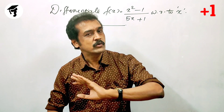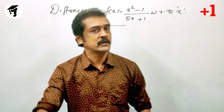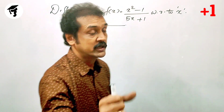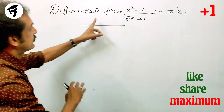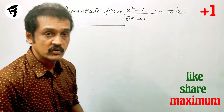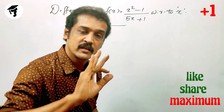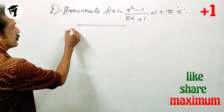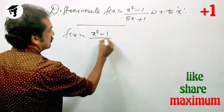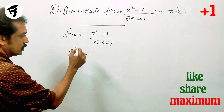Try it in a different way and share it in a different way. And I will try it in a different way — differentiate f of x, which is x squared minus 1 divided by 5x plus 1, with respect to x. It is sure question — one question is 3 mark and 4 mark. Now we have the question: f of x is x squared minus 1 divided by 5x plus 1, then f dash x is equal to?